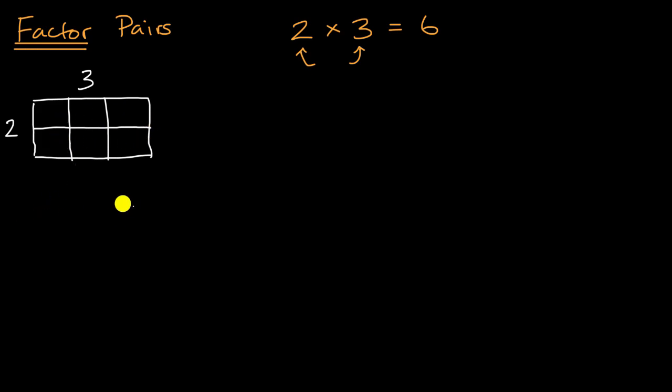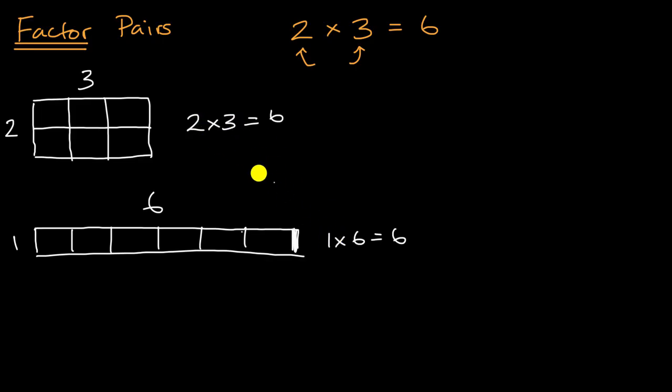Now what are other ways to get to an area of six? Well you could have something that is one row, but then it has six columns, so maybe it looks something like this. So it's one row, and then you have one, two, three, four, five, six columns. And I want them all to be roughly the same size. So one times six would be also an area of six. So that would be another factor pair. We know that two times three is equal to six, and we know that one times six is equal to six. And these are actually the two factor pairs for six.